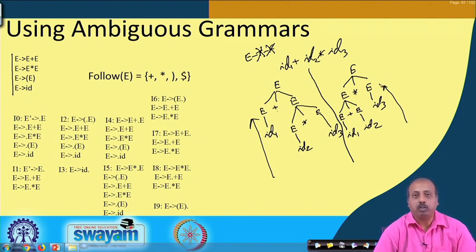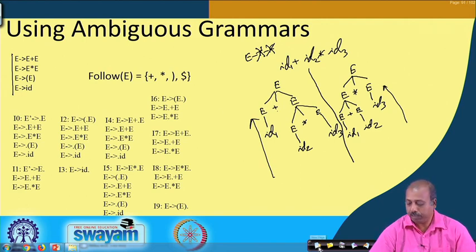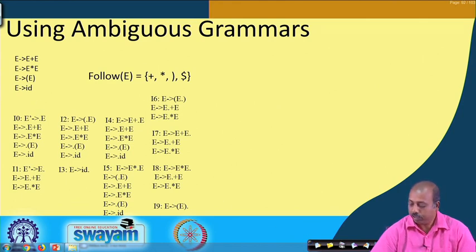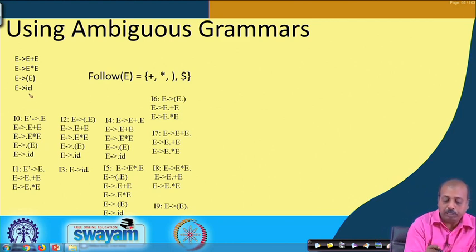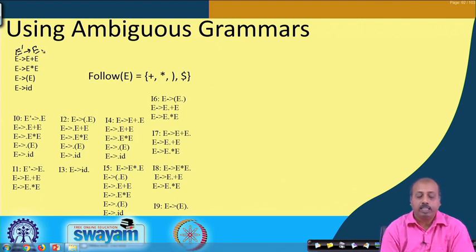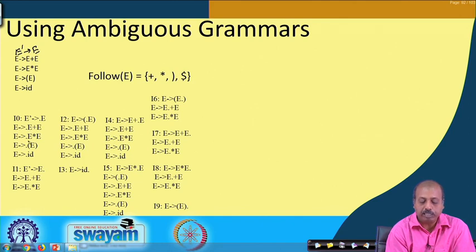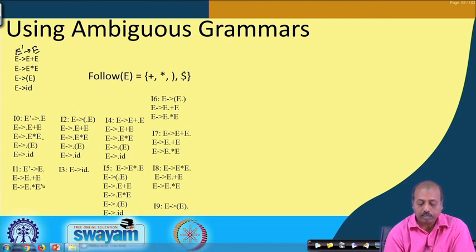When constructing the corresponding SLR parsing table, we introduce the special non-terminal E' producing E. Then I0 is: E'→.E, and by closure we get E→.E+E, E→.E*E, E→.(E), E→.id. From I0 on E we come to I1: E'→E., E→E.+E, E→E.*E.